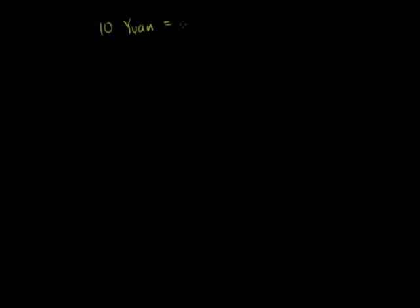So 10 yuan is equal to 1 US dollar. And every time I say dollar in this video, I'm referring to the US dollar. I think this makes sense to a lot of people: if I have $1 and I want to convert it to yuan, I get 10 of them. If I have 10 yuan and I want to convert it to dollars, someone's going to give me a dollar for it.